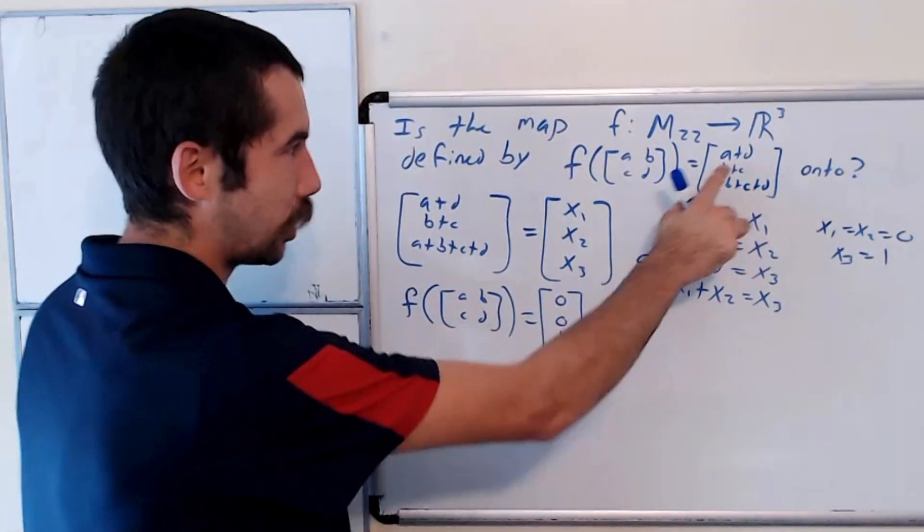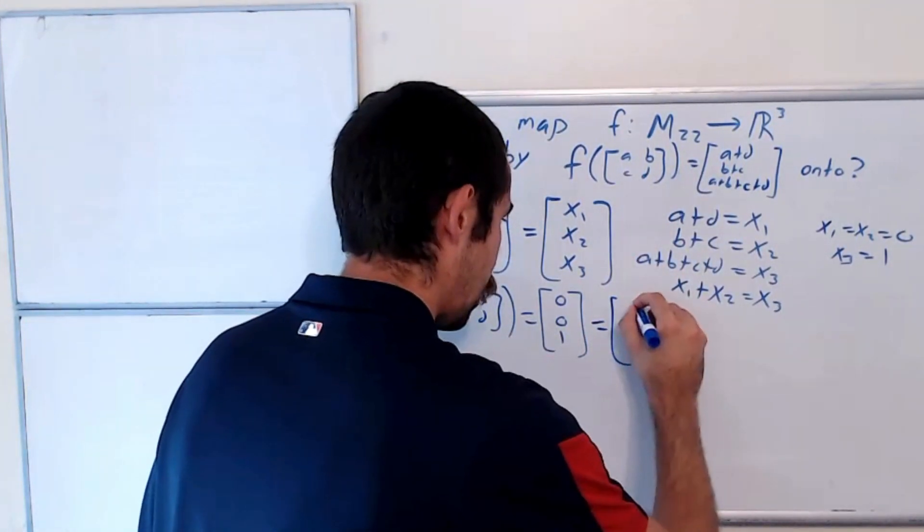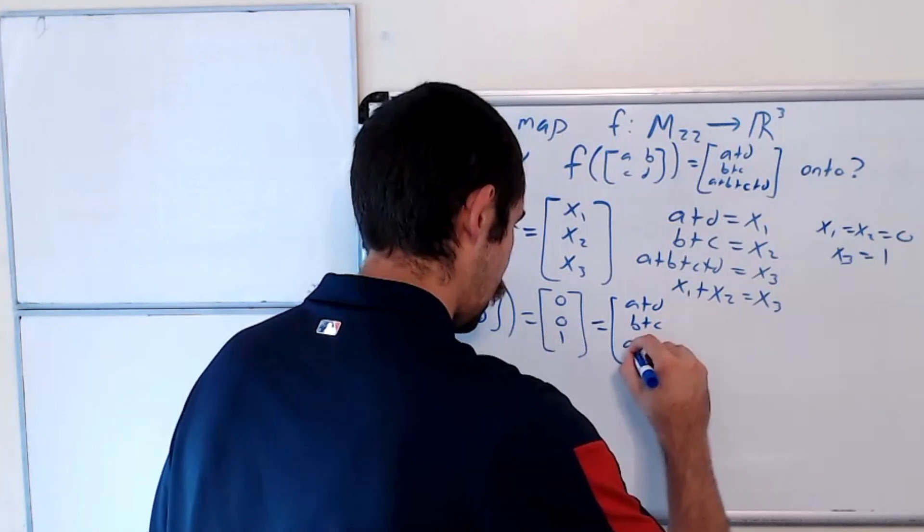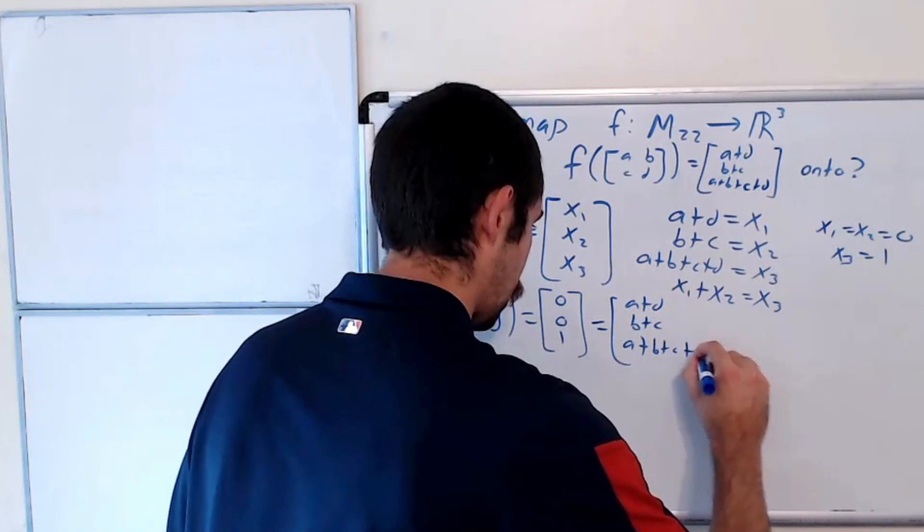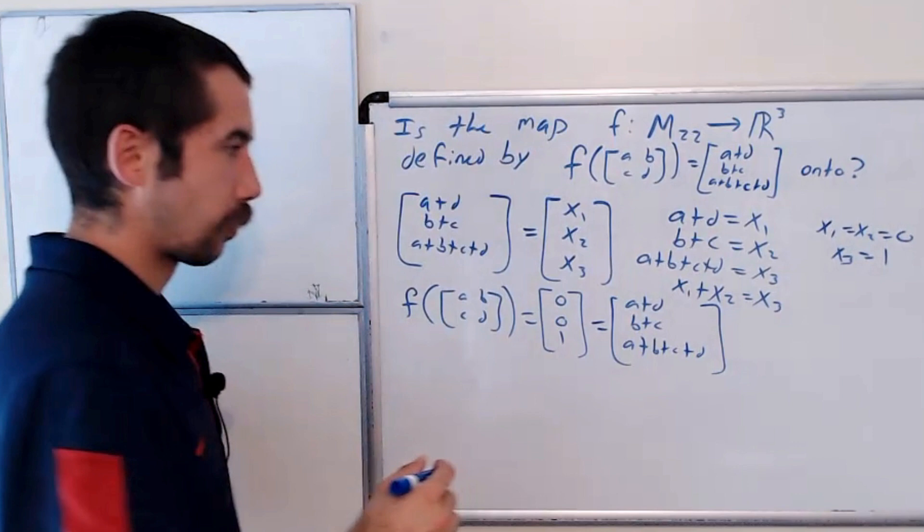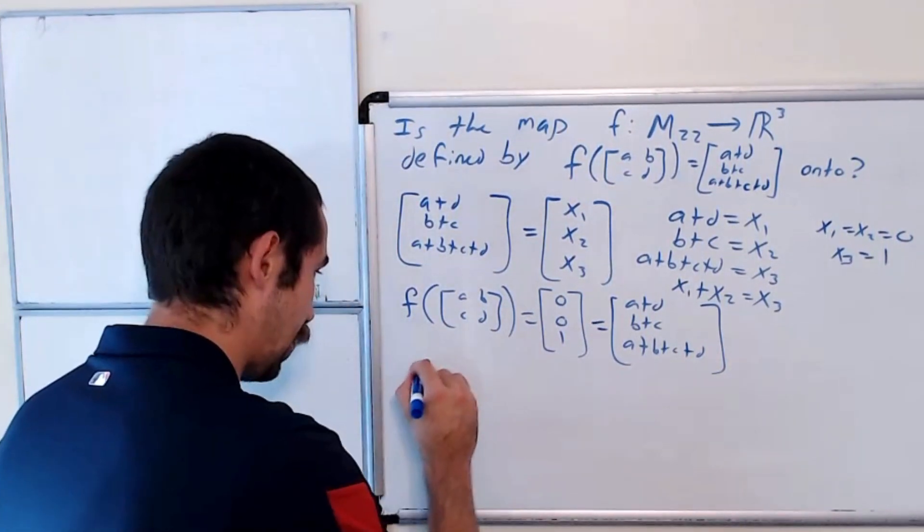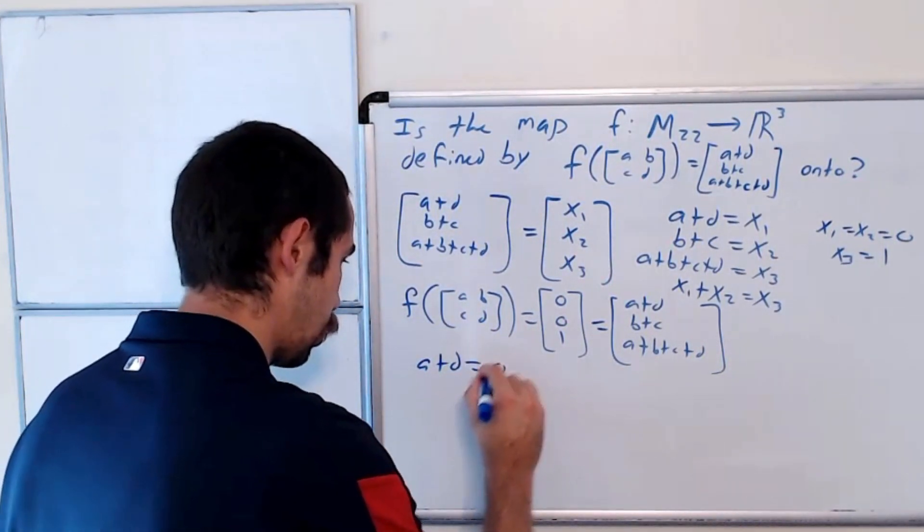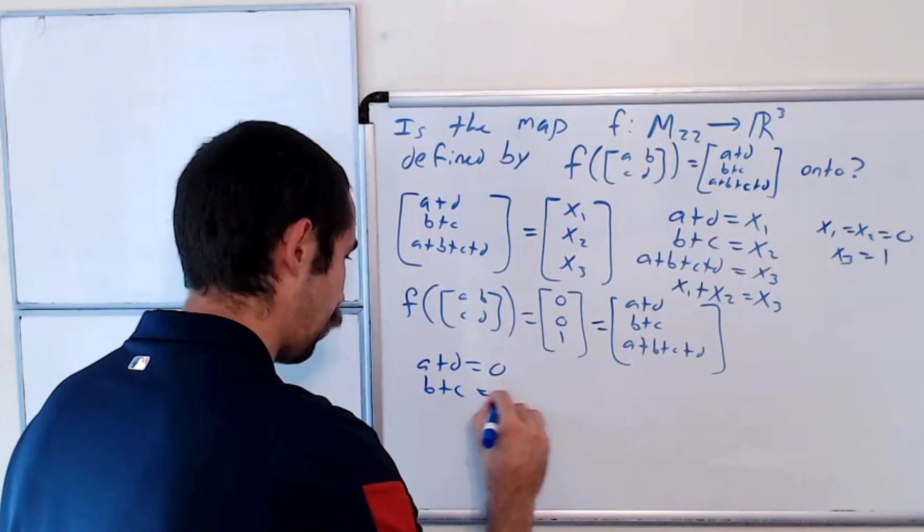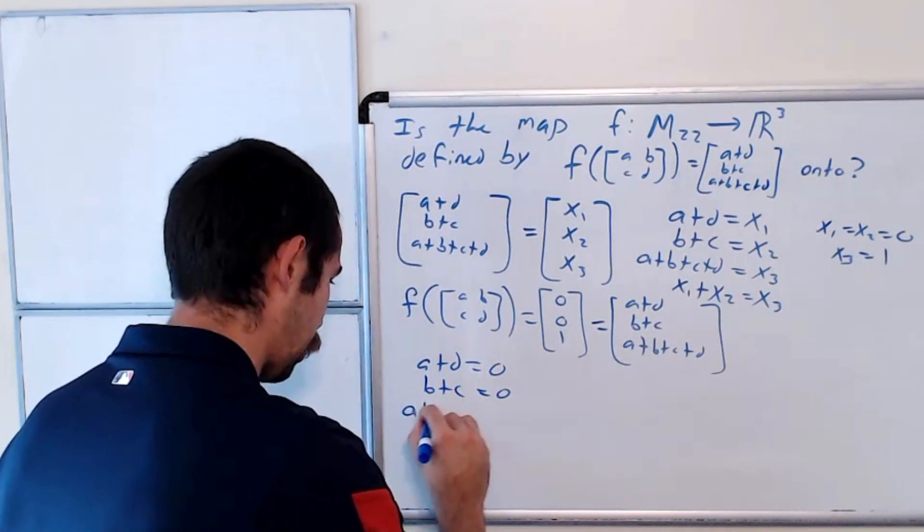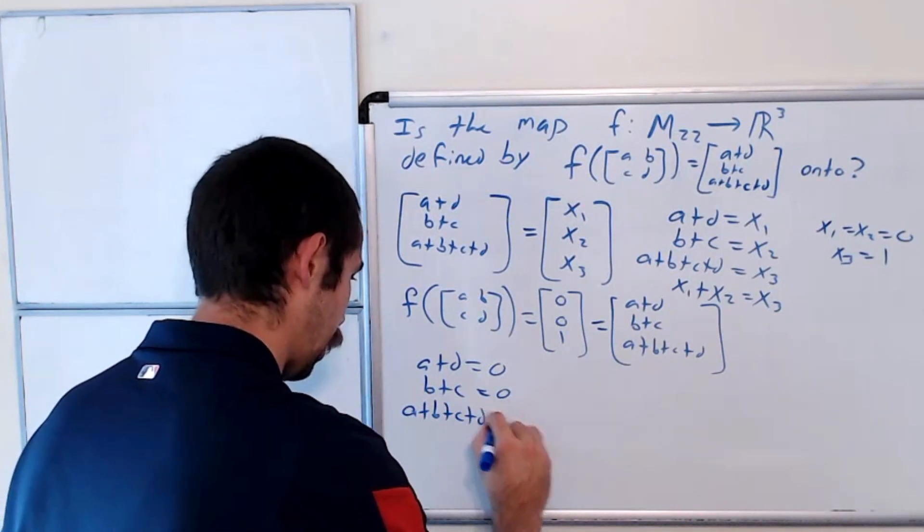But we know by definition, this is A plus D, B plus C, and A plus B plus C plus D. So we have A plus D would have to be 0, B plus C would have to be 0, and A plus B plus C plus D would have to be 1.